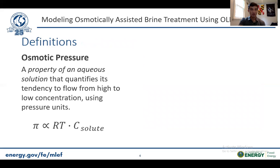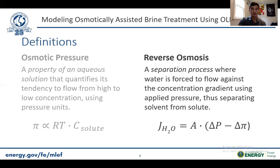Now I want to define a few terms I'll be using often. On the left, we have osmotic pressure, which is a property of an aqueous solution that quantifies its tendency to flow from high to low concentration using pressure units, given by the symbol π. It's important to know that it's a function of the concentration of salt. On the right, we have reverse osmosis, which is a separations process where water is forced to flow against the concentration gradient using applied pressure, thus separating the solvent from solute.